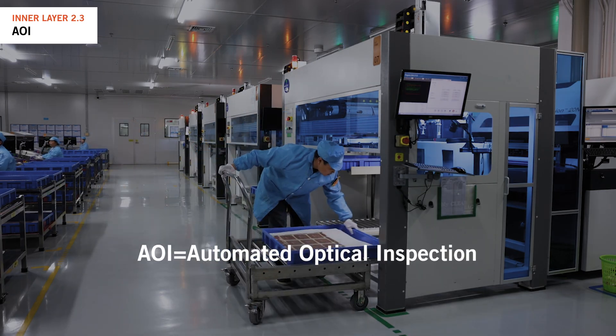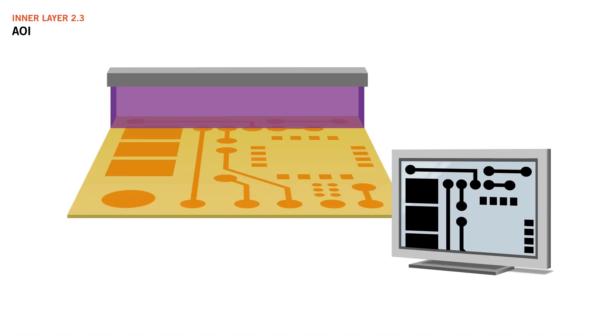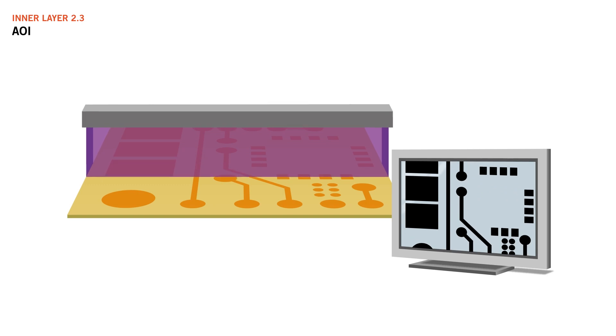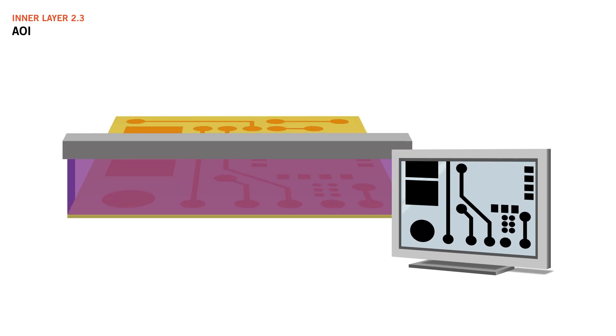Automated optical inspection, AOI, is a way to scan the copper circuitry on inner layer cores and compare it to the design in the Gerber data.